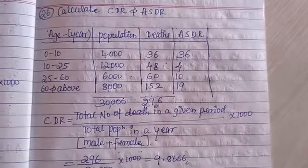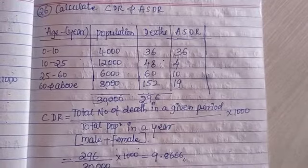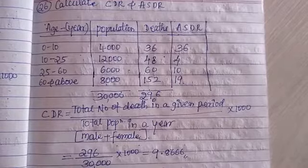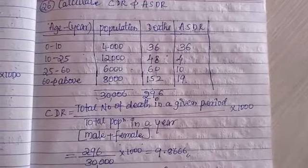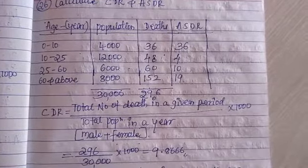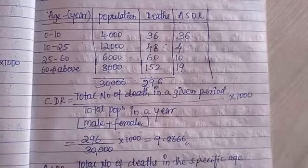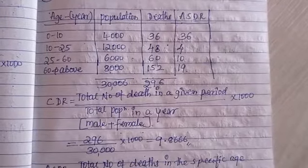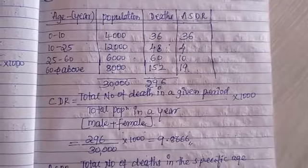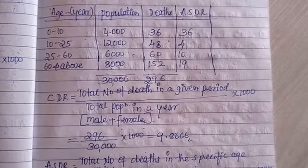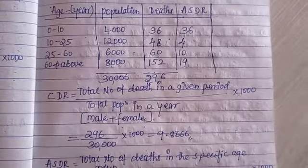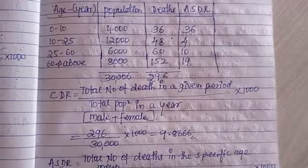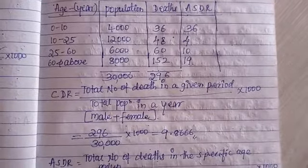The total number of deaths in a given period is 296, calculated as 36 plus 48 plus 60 plus 152. The total population is 30,000. So 296 divided by 30,000 into 1000 gives you the answer 9.8666.